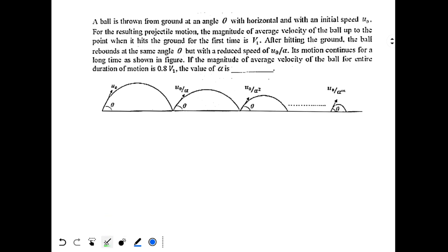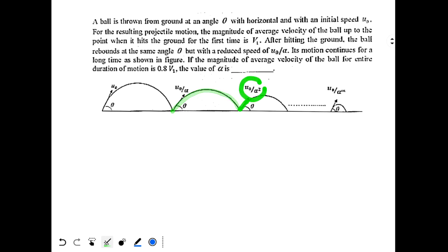This question is actually a very easy question. A particle is thrown with an initial speed of u0 at angle theta with the horizontal. It follows projectile motion, starts from the ground, bounces back with speed u0/alpha at the same angle theta, then bounces again with speed u0/alpha² at the same angle theta. It keeps going like this, following a large number of collisions and bouncing infinite times.